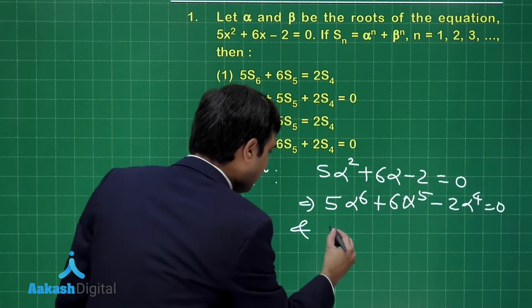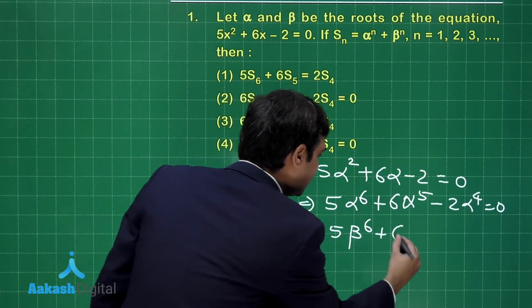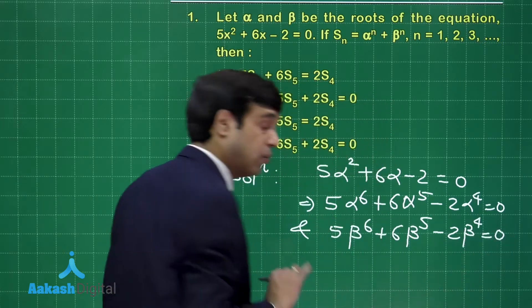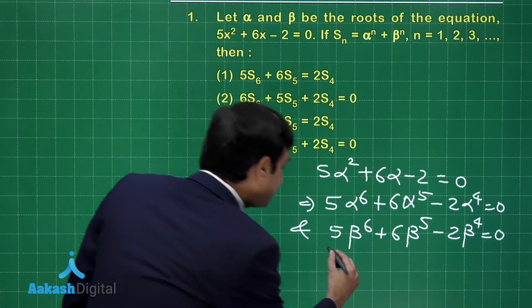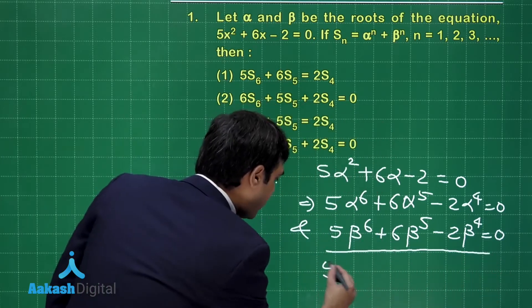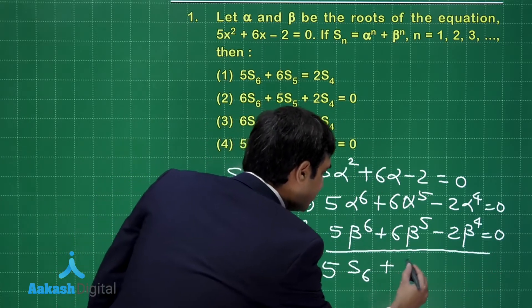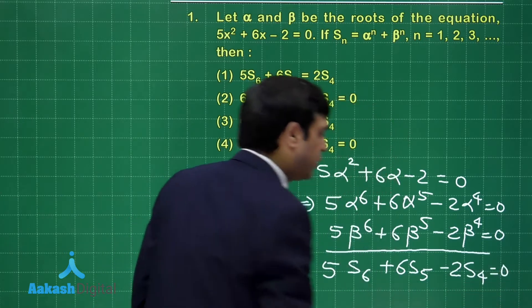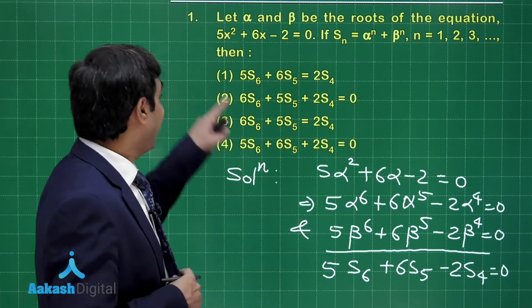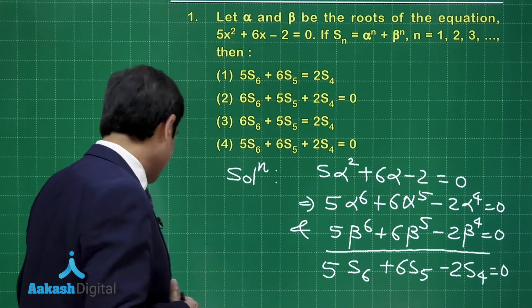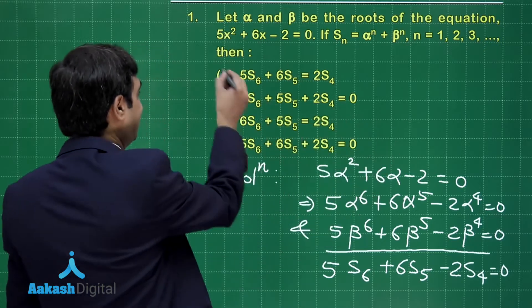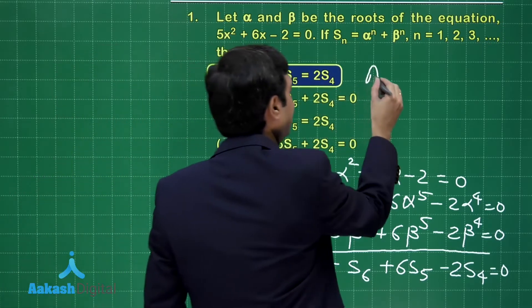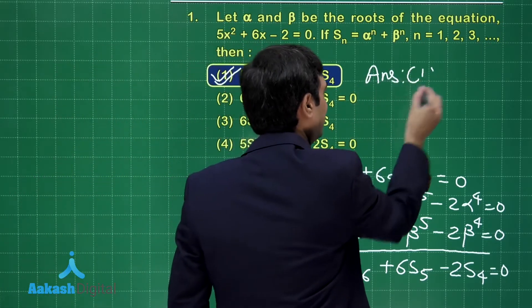Similarly for beta: 5β⁶ + 6β⁵ - 2β⁴ = 0. Just add the two. On adding what you are going to get: 5S₆ + 6S₅ - 2S₄ = 0. Yes, it is given here as option number 1. So let's mark and mention it as the required result.